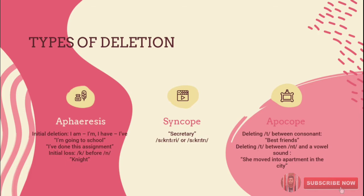According to us, there are three types of deletion. The first is apheresis, which is initial deletion. For example, 'I am' becomes 'I'm' and 'I have' becomes 'I've'. For example: 'I'm going to school' and 'I've done this assignment'.